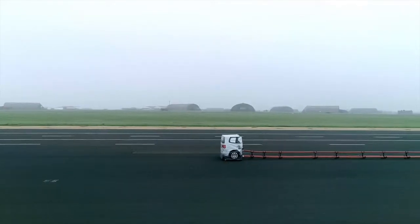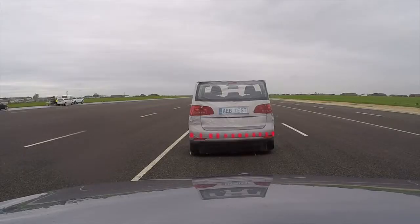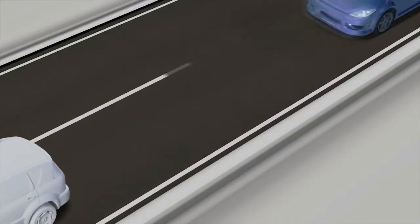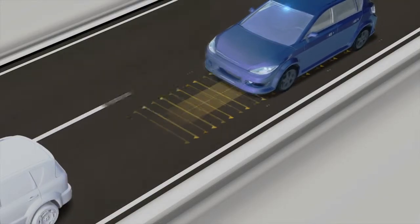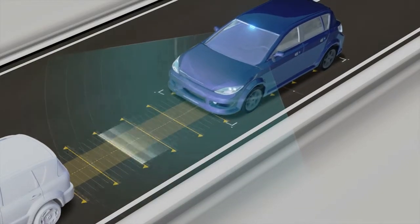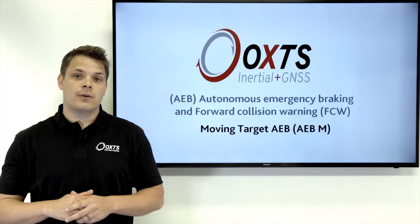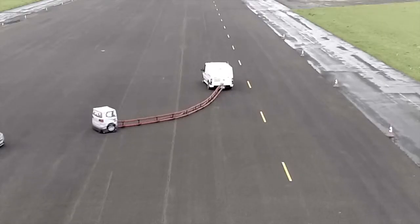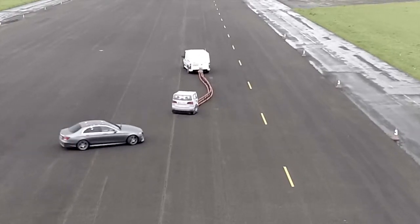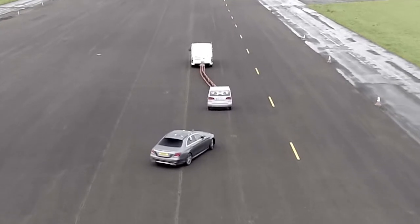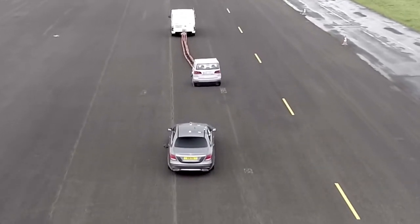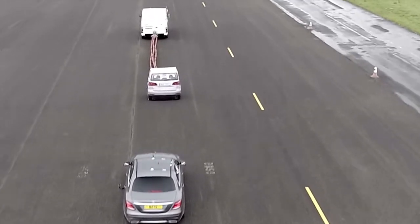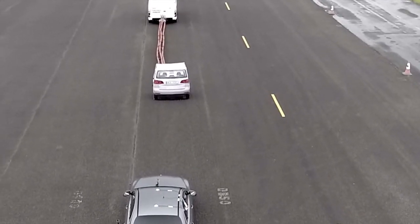We have an RT in the target and we've displaced the output to the back of the soft target. We're calculating the longitudinal range between the Hunter vehicle and that soft target, and a time-to-collision value is what the test engineers are looking for. The soft target is being towed by another vehicle, and the RT output is displaced to the soft target from the towing vehicle.